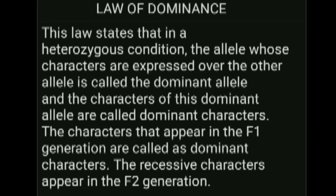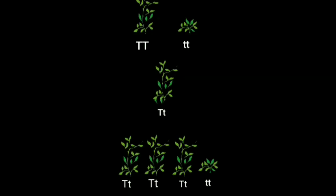Let us learn this law with the help of an example. Here we can see the monohybrid cross performed by Mendel where the contrasting character is stem height. In the parental generation, one plant is tall whereas the other plant is dwarf. But in the F1 generation, we got capital T small t, which is a heterozygous condition, and still only the tall character was expressed while the dwarf character was unable to express itself.